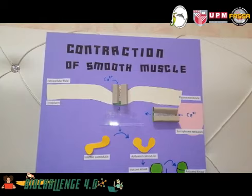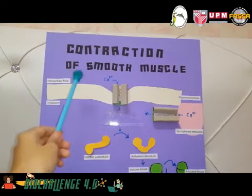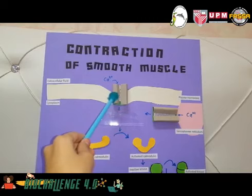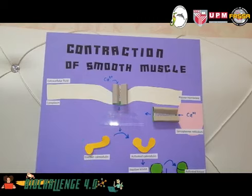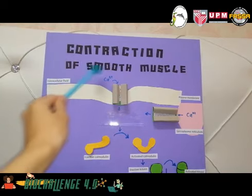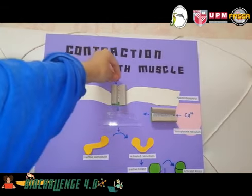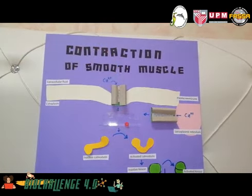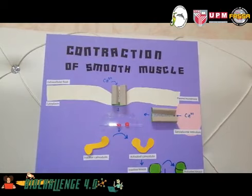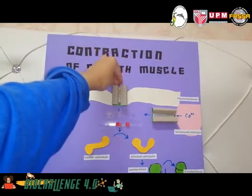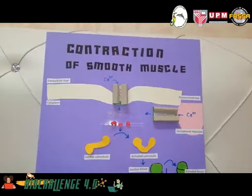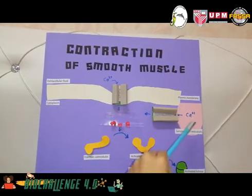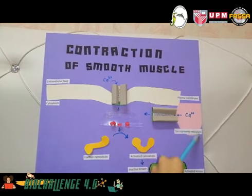Next, I'll explain the contraction of smooth muscle. Here we see the plasma membrane and an ion channel which allows calcium inside. Remember, most of the calcium comes from the extracellular fluid, though some will also come from the sarcoplasmic reticulum.